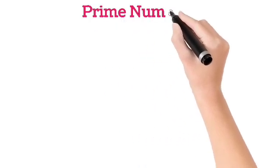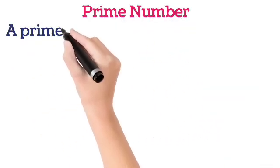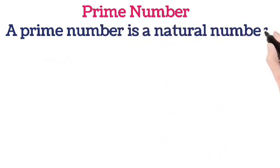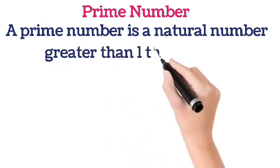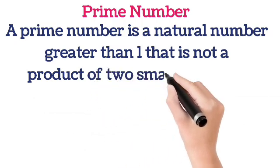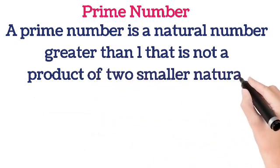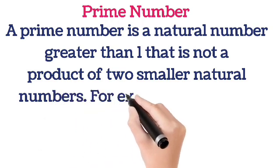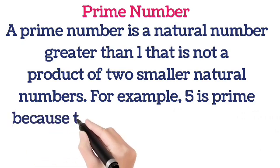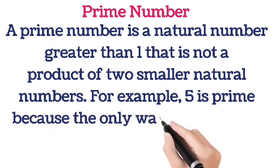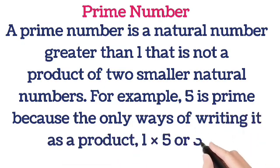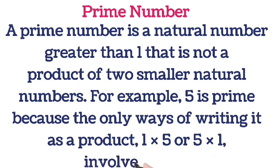Prime numbers. A prime number is a natural number greater than 1 that is not a product of two smaller natural numbers. For example, 5 is a prime number because the only way to write it is as a product of 1 times 5.